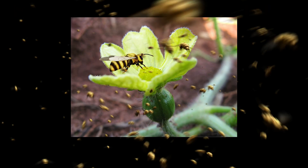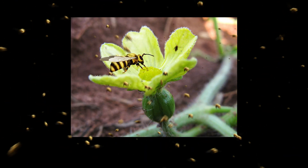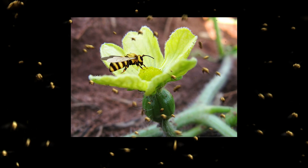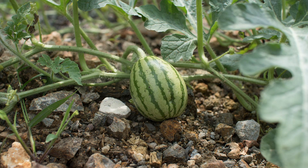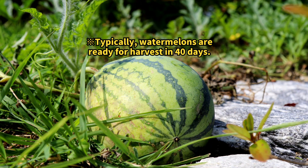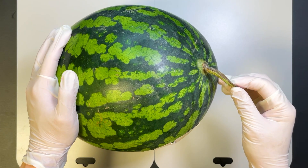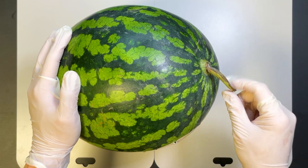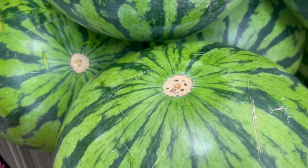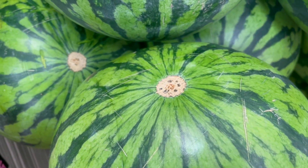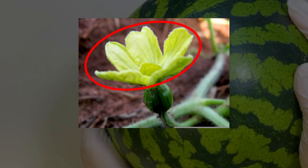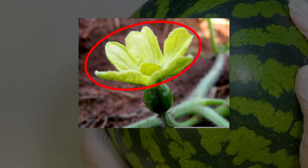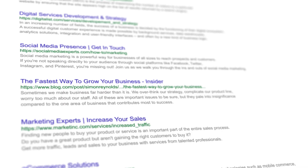Through the diligent work of bees, pollen from the male flower is transferred to the female. Upon successful pollination, this lower ovary enlarges, becoming a watermelon. The stem connects the watermelon to its vine. Interestingly, the section often called the watermelon's navel is a relic from the detachment of the flower segment atop the ovary.